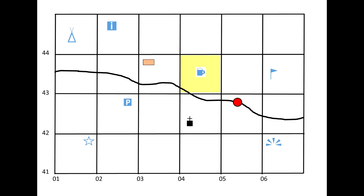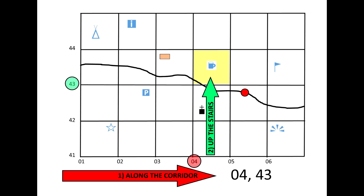Our next four-figure grid reference example is the public house, which is symbolized by a pint glass. Again, we're going to go along the corridor: zero one, zero two, zero three, zero four. Then we go up the stairs: four one, four two, four three. So our four-figure grid reference for the public house is zero four, four three.